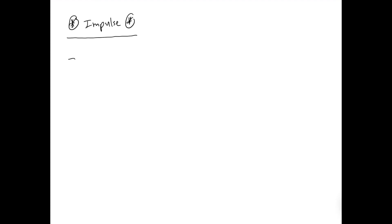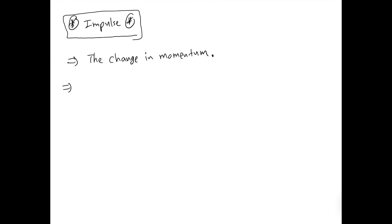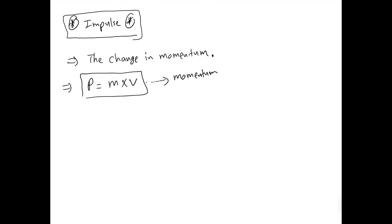Impulse, in a very simplistic way, is the change in momentum. This is basically the definition of impulse — it's the change in momentum. From the previous lesson, momentum, given the letter p, equals mass multiplied by velocity. This is the formula to calculate momentum.